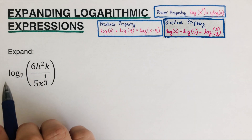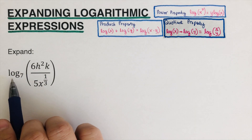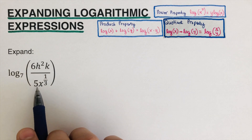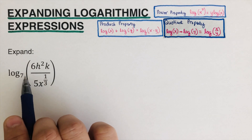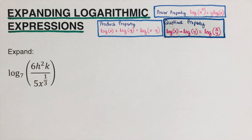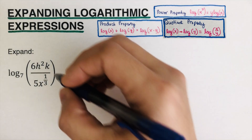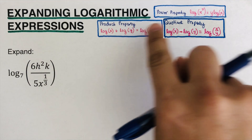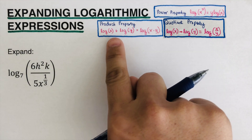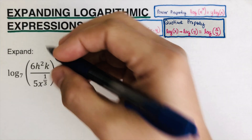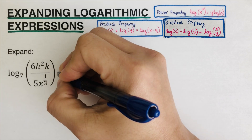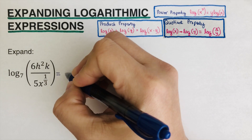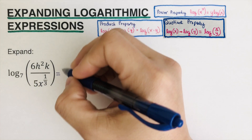So in this expression, we have log of 6h squared k over 5x to the 1/3, to the base 7. How do we expand this? The first thing we're going to do is use both the product and the quotient property. If I were to expand this, we're going to take each one of these.